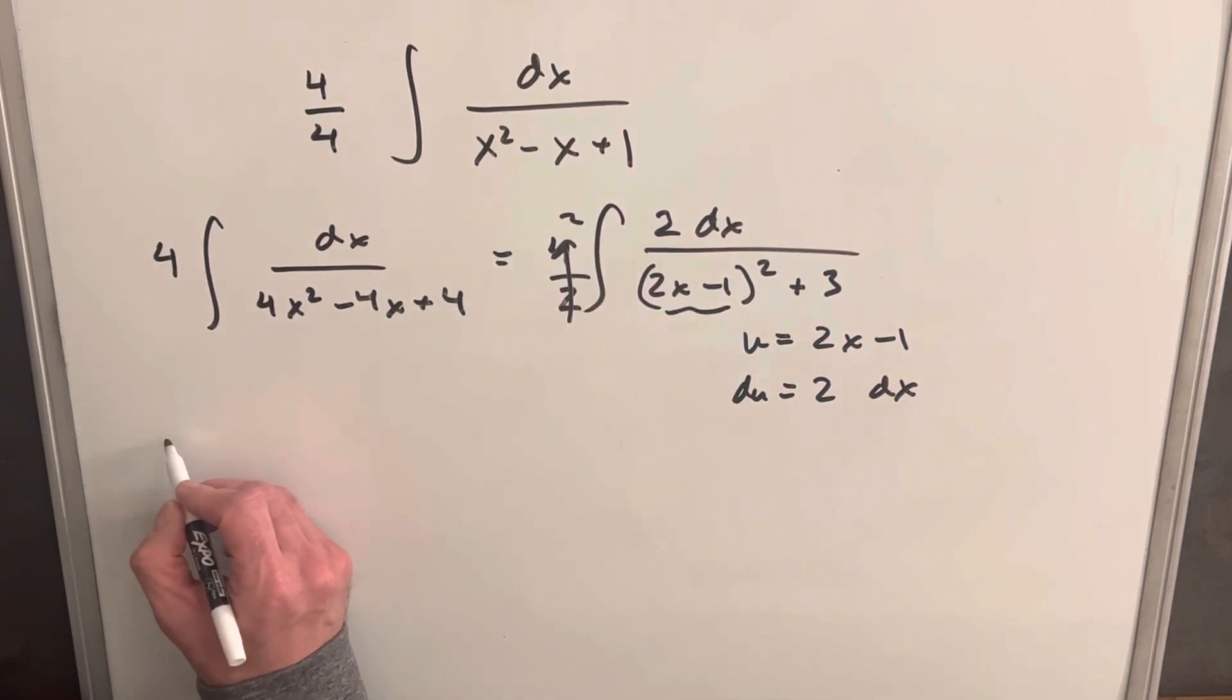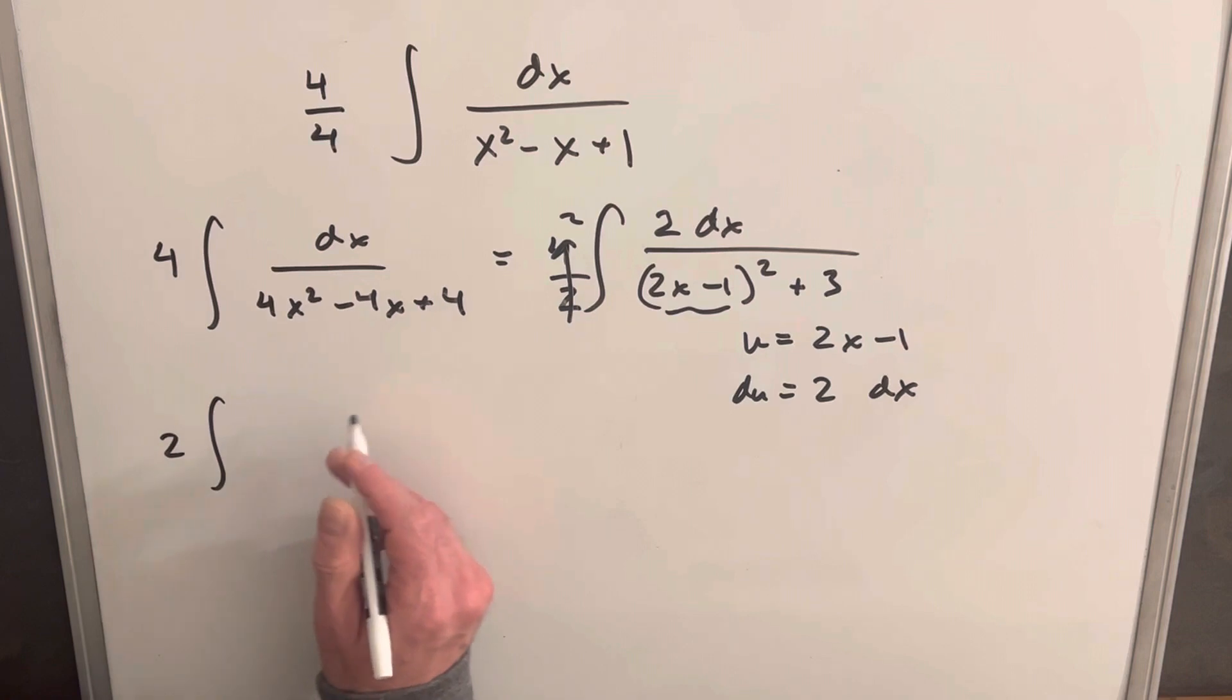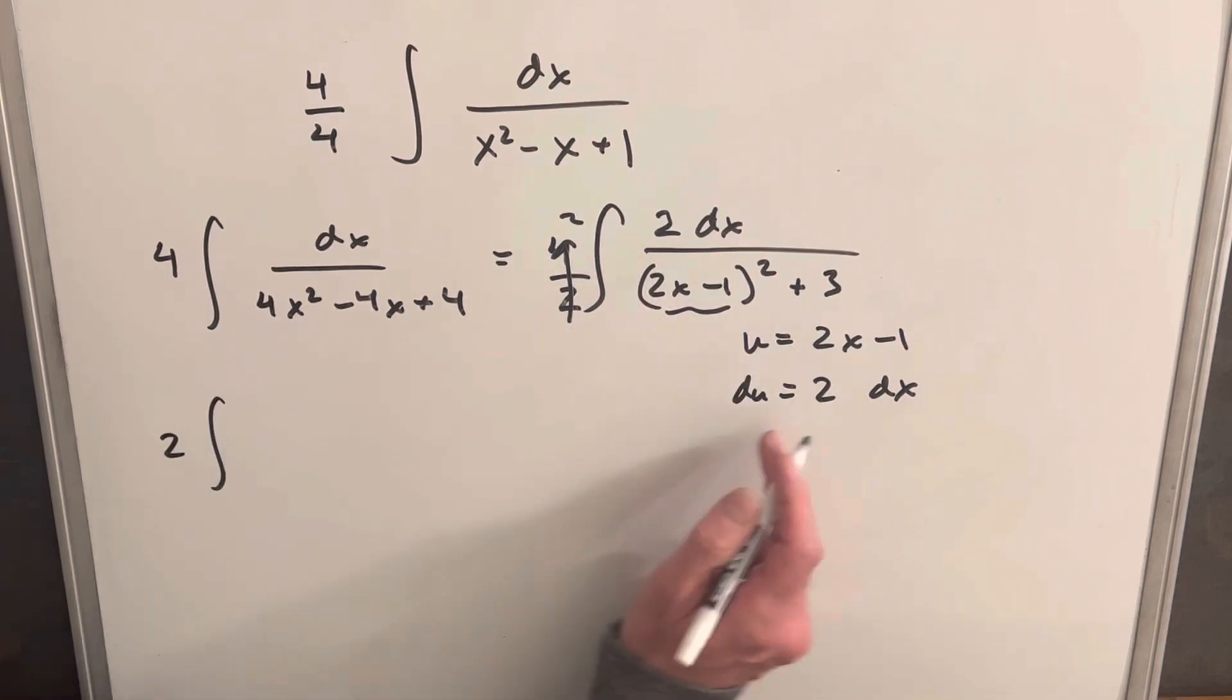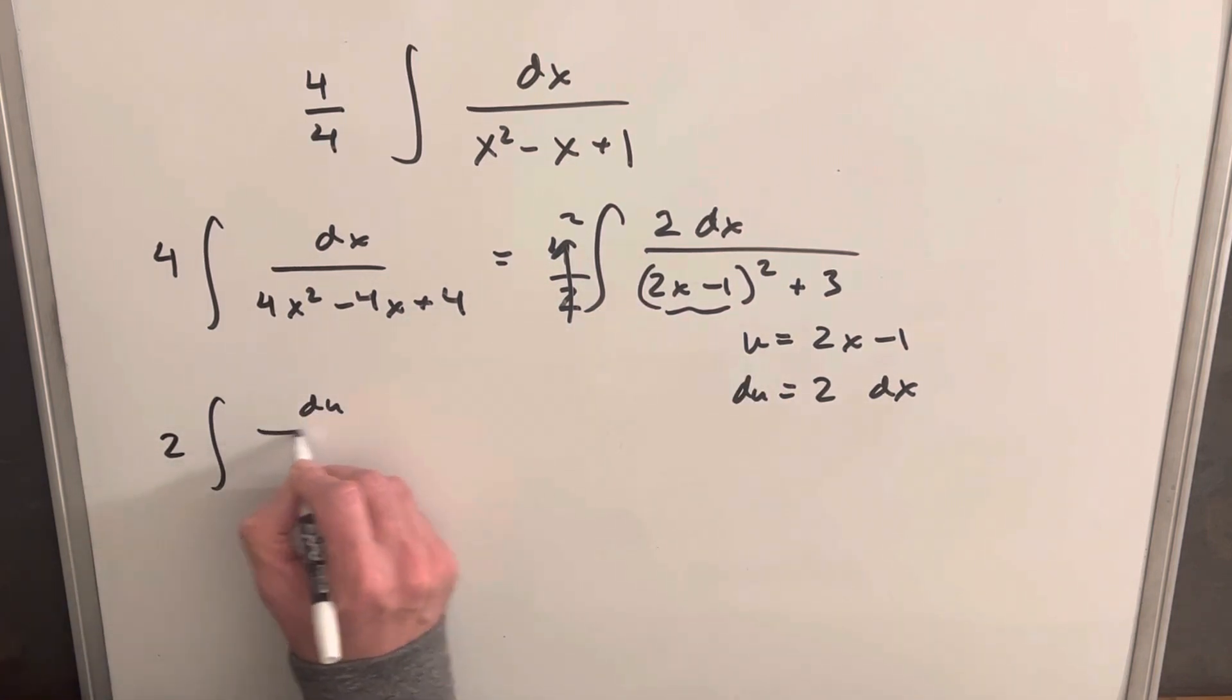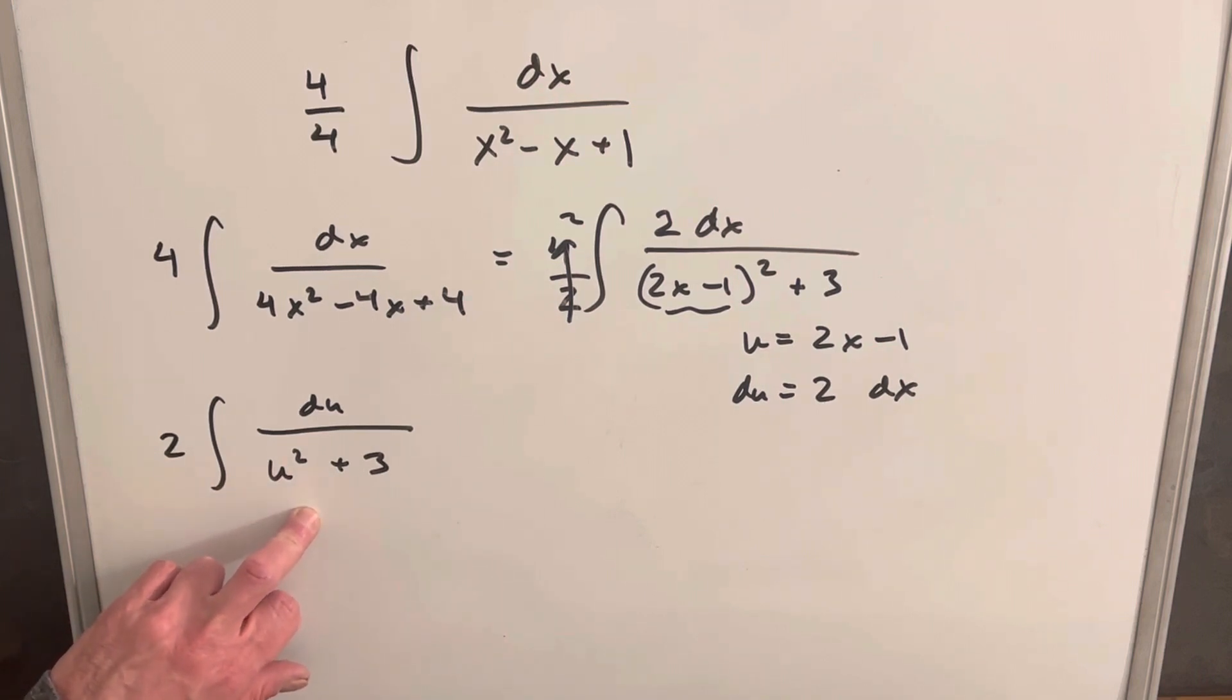So this piece here is going to be a 2. So when we rewrite this we're going to have a 2 in front. Making our substitution we're going to have du in the numerator, and then our denominator is going to be u squared plus 3. But now this is starting to look like the formula for arctan.